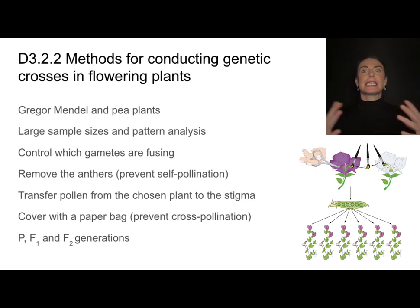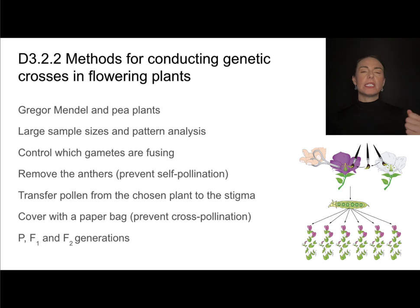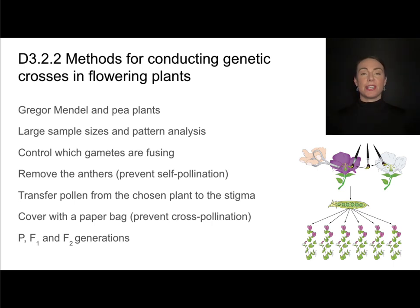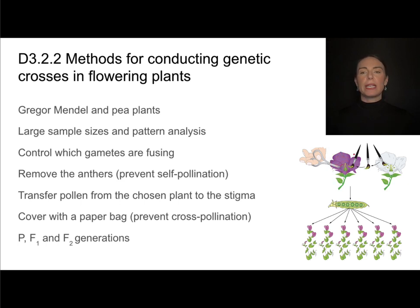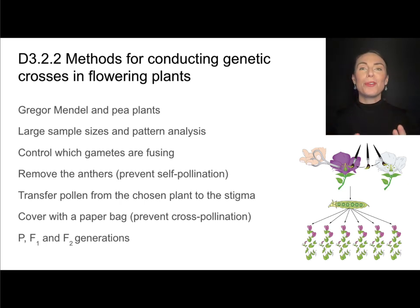Gregor Mendel was one of the founding scientists in the field of inheritance and genetics, and he worked a lot with pea plants. Plants make really great genetic experimentation organisms because they have relatively short generation times and there aren't any ethical considerations. So he had insanely large sample sizes and was looking within those samples to find patterns in inheritance. To create controlled studies, he needed to control which gametes were fusing. So he cut off the anthers of plants to prevent self-pollination, transferred pollen from some plants to others, and covered them with a paper bag to prevent further cross-pollination.